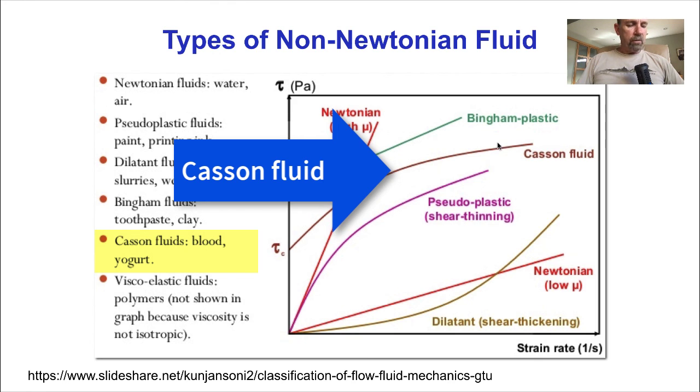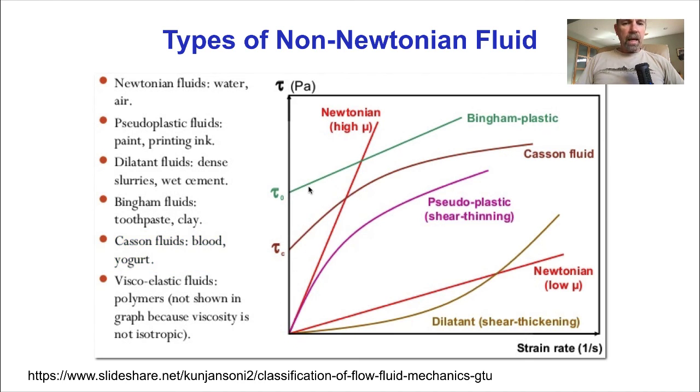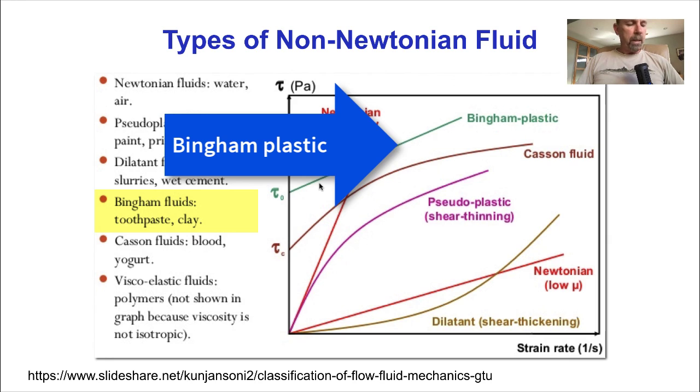Whole blood is actually more like a so-called Casson fluid, which is a shear thinning fluid, but also has a finite yield stress shown here as tau sub c. That yield stress must be overcome before the fluid can flow at all. So at very low shear stresses, a Casson fluid behaves like a solid.